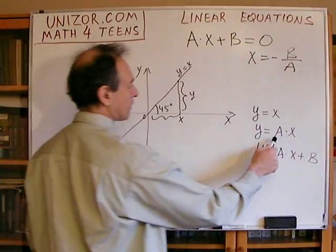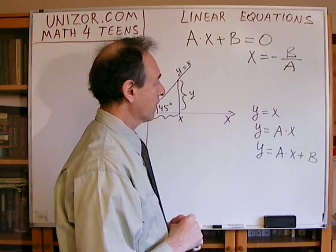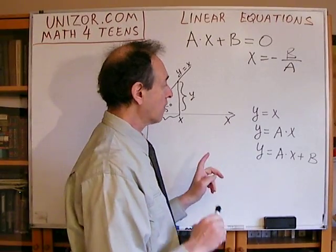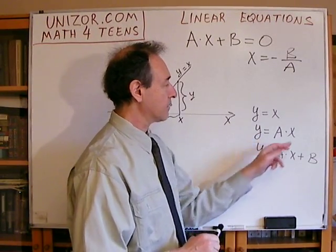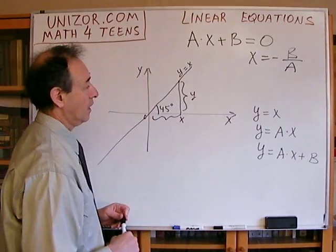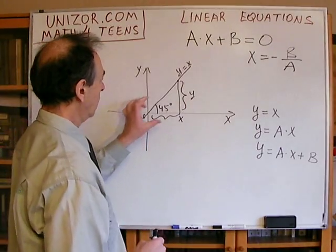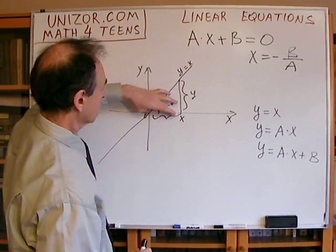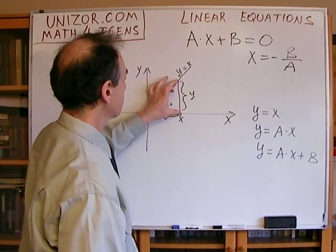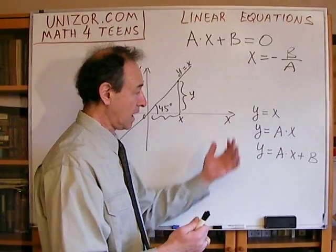Now, what happens if I multiply by a? Let's consider three cases. When a is equal to zero — which we assumed it is not, but I'd like to present that graph — and then positive a and negative a. With positive a, it's quite simple. Right now, this length is x, but I want a times x, which means this length becomes a times longer if a is greater than one, or shorter if a is less than one.